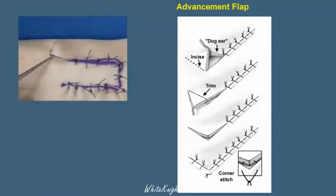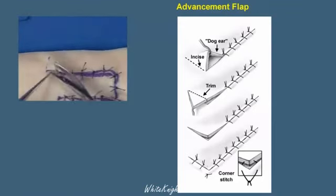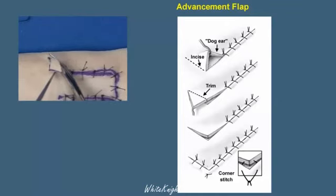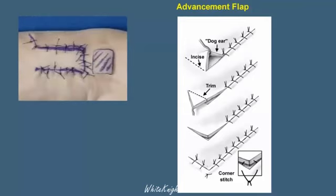Undermining is done under this dog ear deformity. The skin is transposed back until one can exactly see how much skin is needed to be trimmed. The skin is then trimmed, and the flap is inset. This flap is then sutured into place, and the dog ear deformity is resolved.